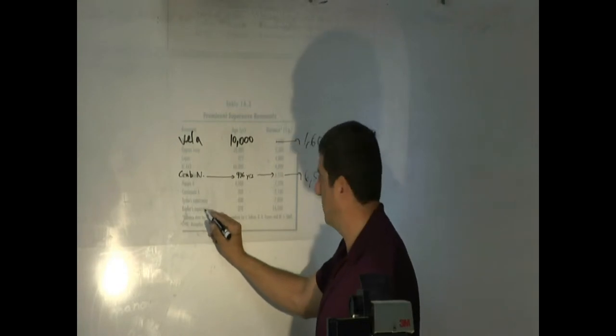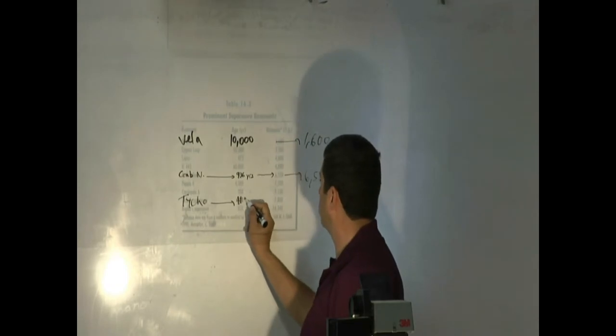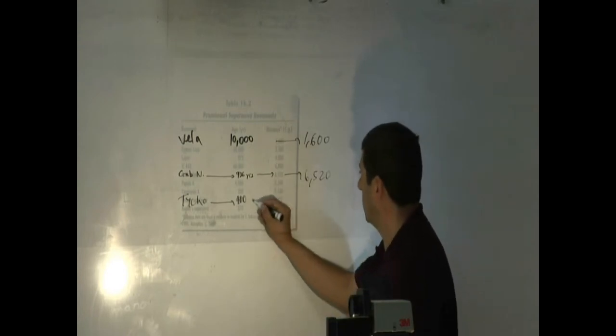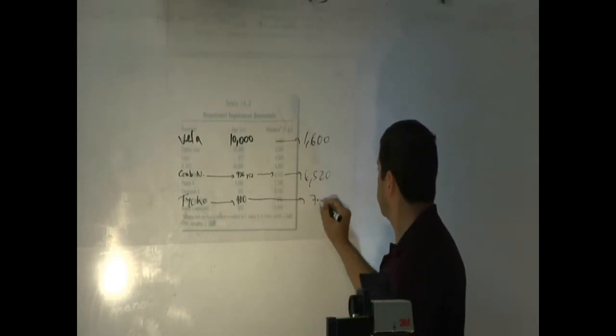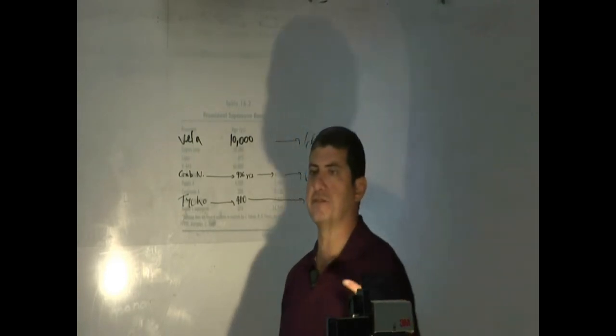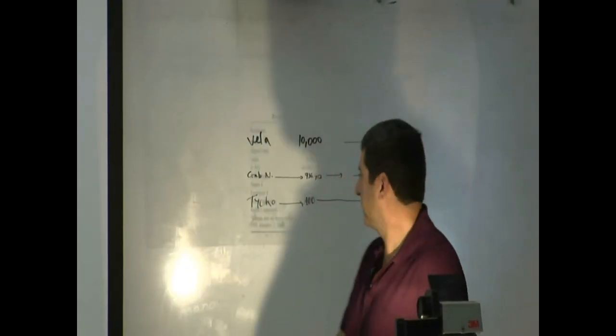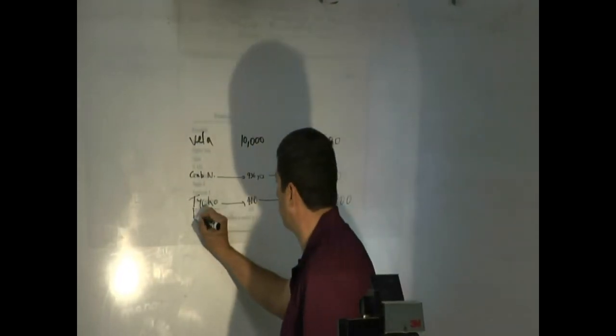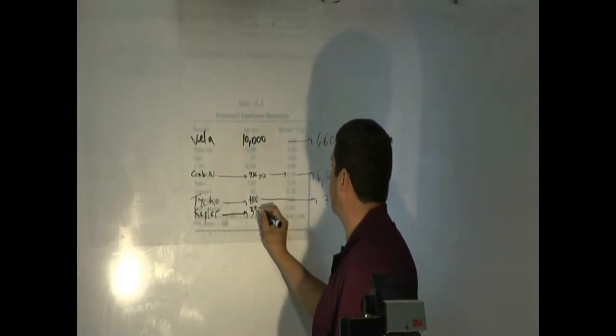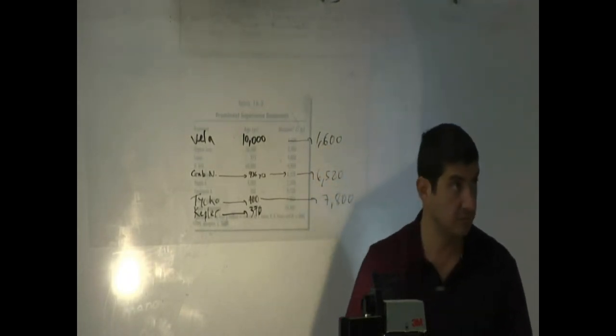Tycho's supernova. Tycho, you see? It happened 400 years ago, which is when roughly Tycho lived, 1600. How far away is it? 7,800 light years. So the star exploded 7,800 years before Tycho observed it. These things are very far. Kepler supernova. He observed it 370 years ago, so basically he observed it around 30 years after Tycho did.